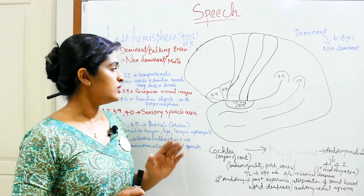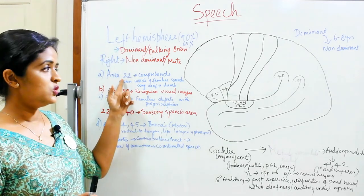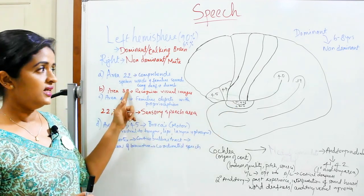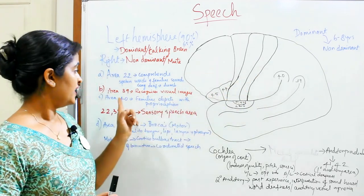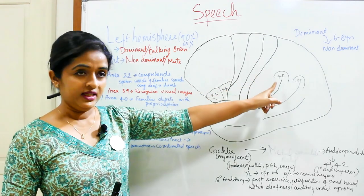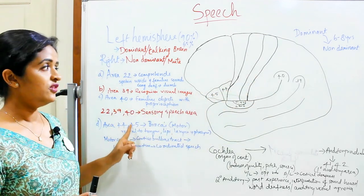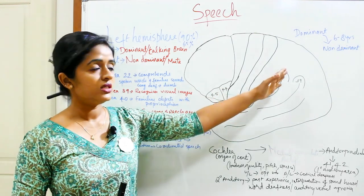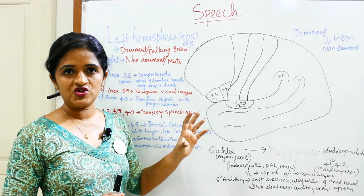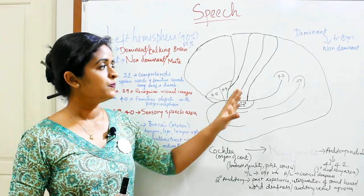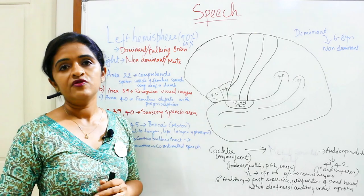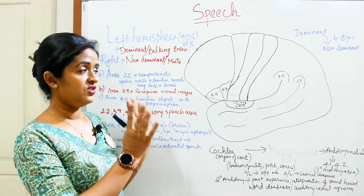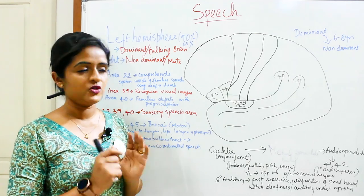There are mainly four speech centers. Area number 22 in the temporal lobe, area number 39 in the parietal lobe, area number 40 in the parietal lobe, and areas number 44 and 45 in the frontal lobe. So there are mainly three lobes controlling speech — the temporal lobe, the parietal lobe, and the frontal lobe.